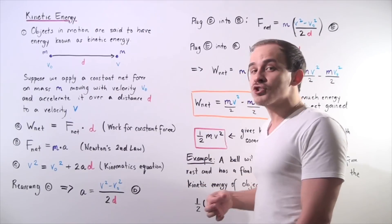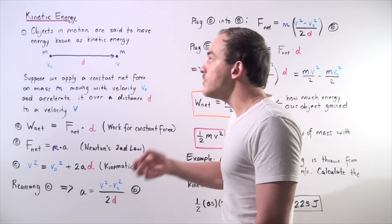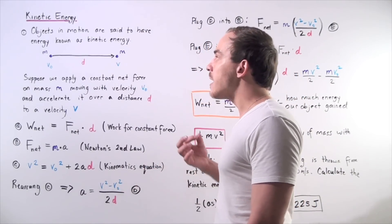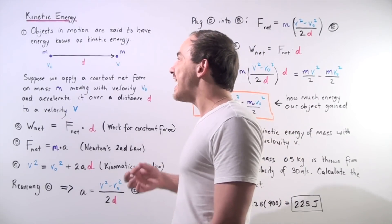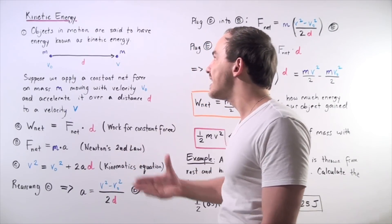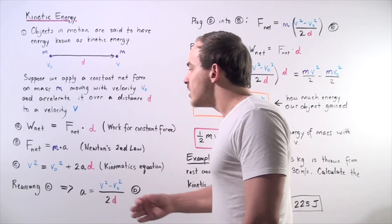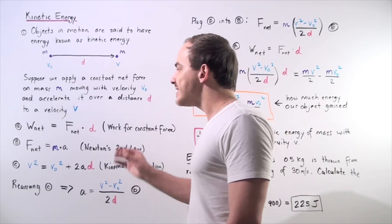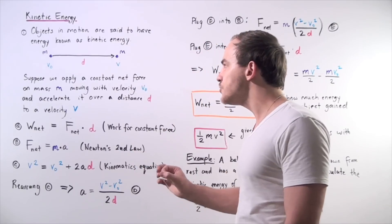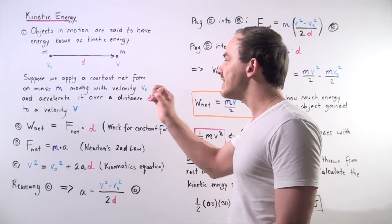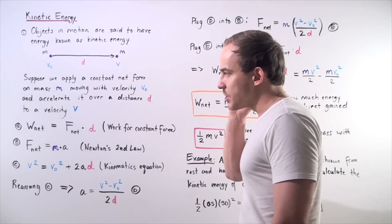Work is a transfer of energy, so we're transferring energy to our mass. And our mass is therefore gaining velocity — our mass is gaining more kinetic energy. So let's try to figure out how much more kinetic energy our object has at the end than at the initial point.